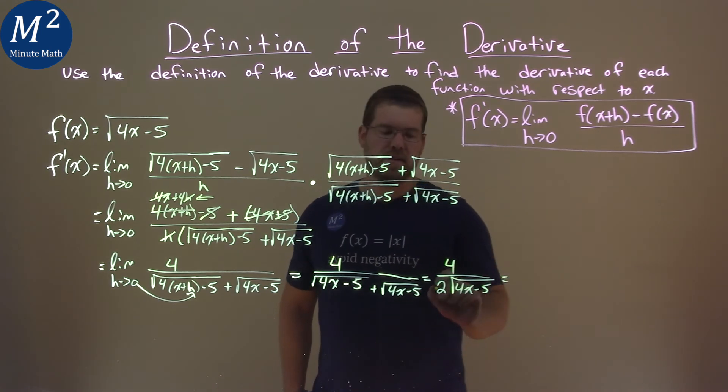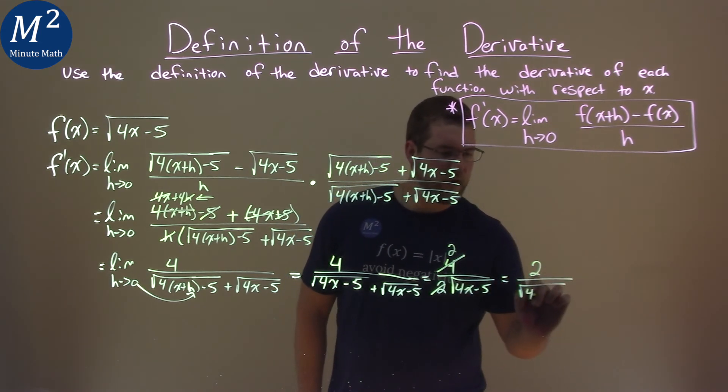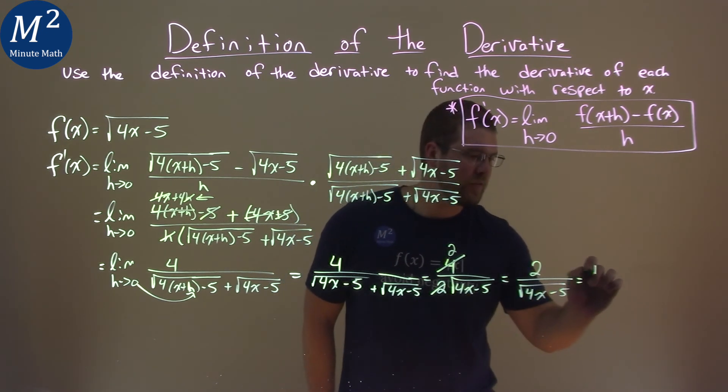Let's keep on simplifying. The 2 and the 4 cancel and give us a 2 up top. So, now we have 2 over the square root of 4x minus 5. And guess what? That's our derivative. Good enough for me.